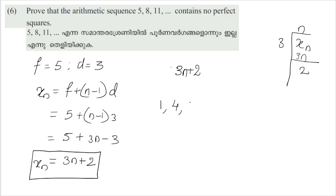Let us list the perfect squares: 4, 9, 16, 25, 36 and so on, and check their remainders when divided by 3.